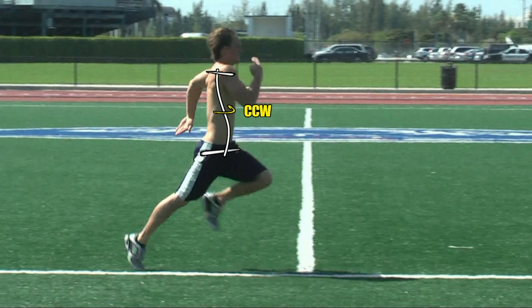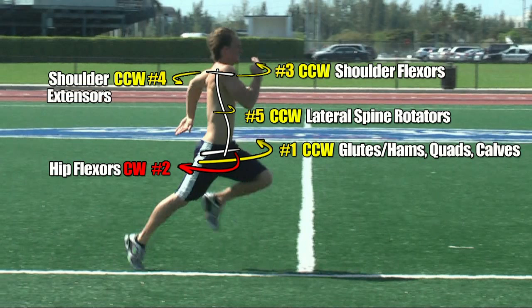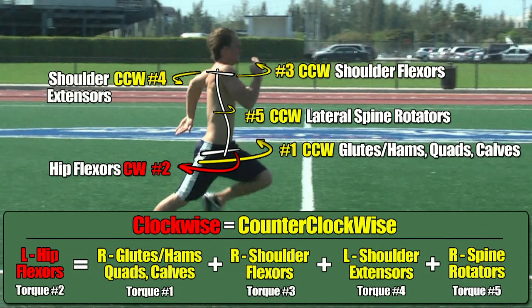This completes the identification of all five torques that are produced around the spinal column when you run, and here they are for you to see all at once, as well as the final torque equation that must be balanced so that you are able to run in a straight path.